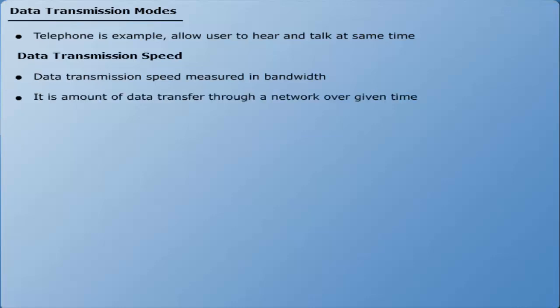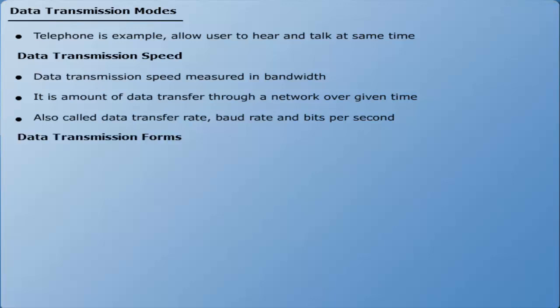Data transmission speed is measured in bandwidth. It is a measure of the amount of data transferred through a network over a given amount of time, also called data transfer rate, expressed in bits per second (BPS). There are two forms of data transmission: analog and digital.